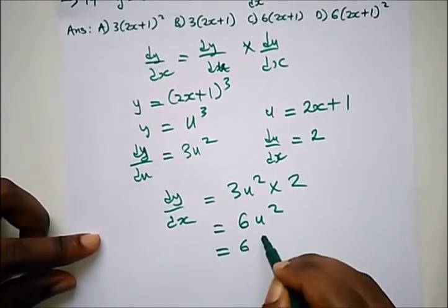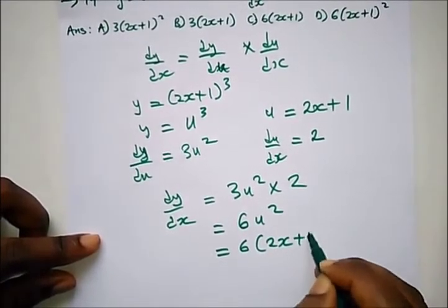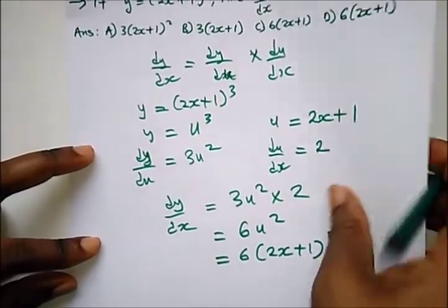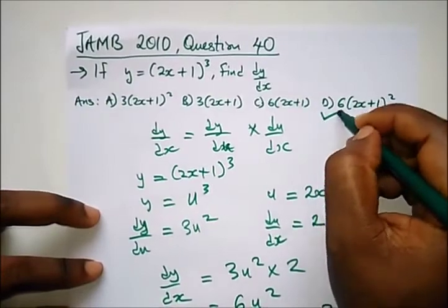u is (2x+1). So the answer is 6(2x+1)² and the correct option is D.